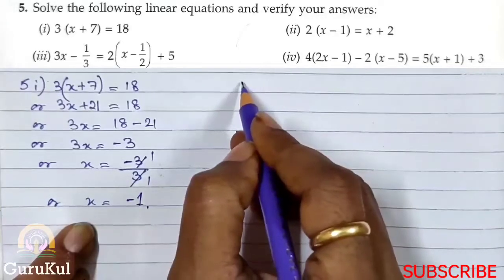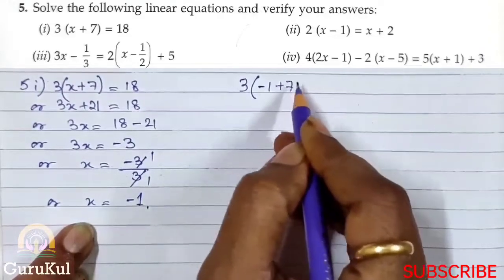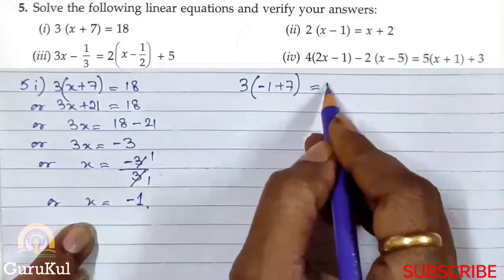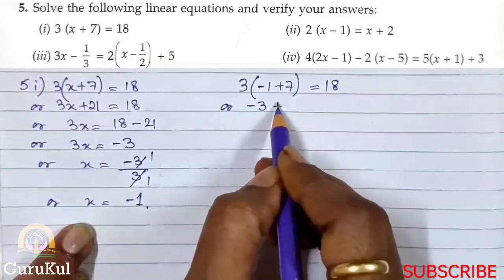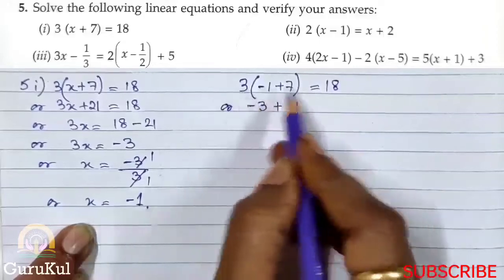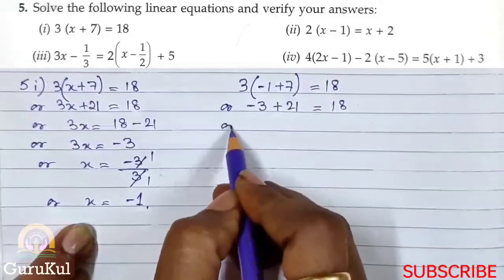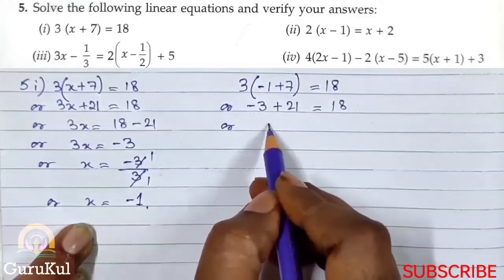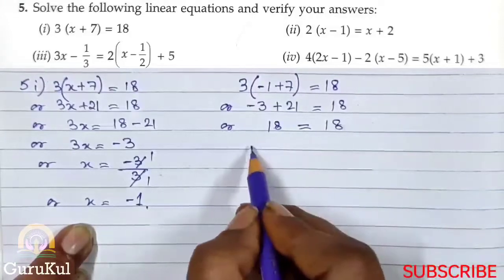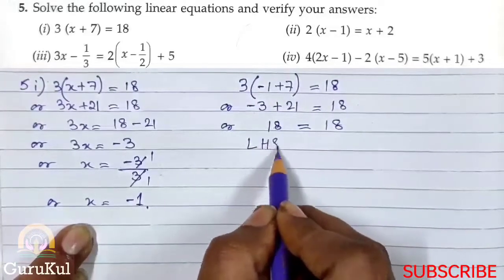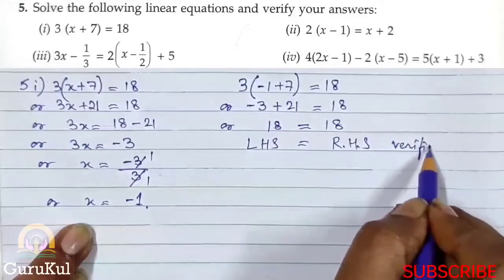Verification: substitute x = -1. So 3 bracket minus 1 plus 7 bracket close is equal to 18. That gives minus 3 plus 21, which is 18. So 18 is equal to 18 — left hand side is equal to right hand side, which is verified.